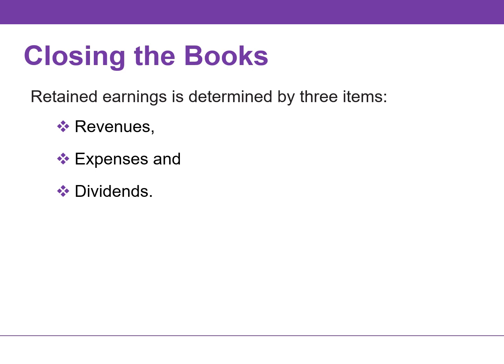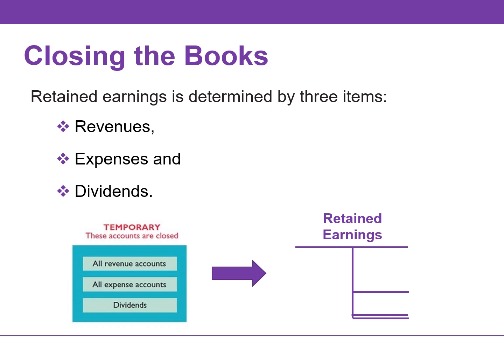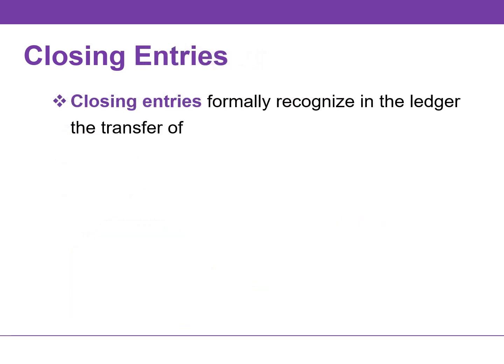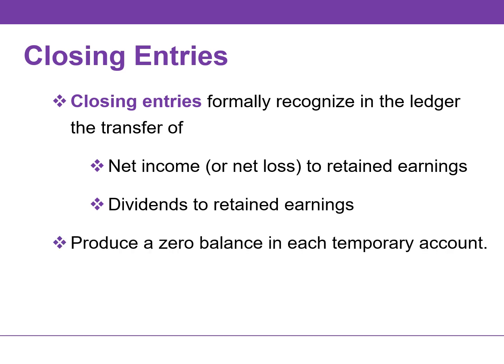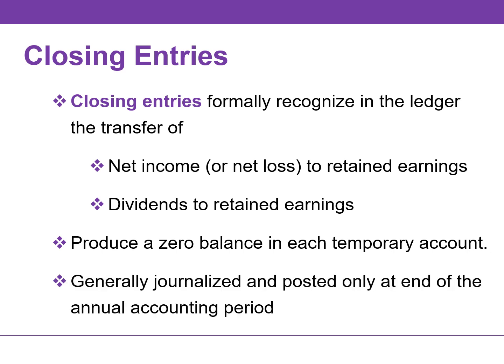At the end of the annual accounting period, the company transfers the temporary account balances to retained earnings. Closing entries formally recognize in the ledger the transfer of net income or net loss to retained earnings, as well as dividends to retained earnings. Closing entries also produce a zero balance in each temporary account, so these accounts are ready to accumulate data in the next accounting period. Companies generally journalize and post only at the end of the annual accounting period.